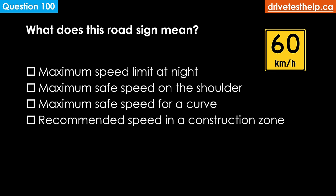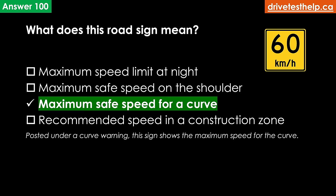What does this road sign mean? Options: maximum speed limit at night; maximum safe speed on the shoulder; maximum safe speed for a curve; recommended speed in a construction zone. The correct answer is maximum safe speed for a curve. Posted under a curve warning, this sign shows the maximum safe speed for the curve.